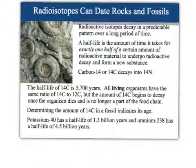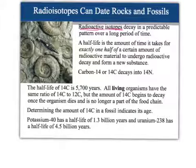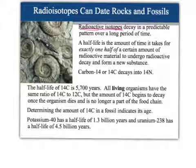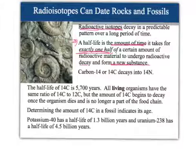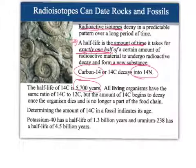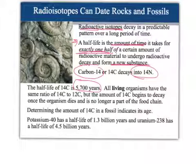We can use radioactive isotopes to help us date rocks and fossils to get a better idea of when things occurred. A radioactive isotope decays in a predictable pattern, and we base this on its half-life — the amount of time it takes for one half of that material to decay and become a new substance. One of the most common is carbon-14, which decays after about 5,700 years into nitrogen. All living organisms have the same ratio of carbon-14 to carbon-12; carbon-14 is radioactive and will decay, while carbon-12 will not.